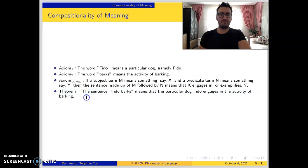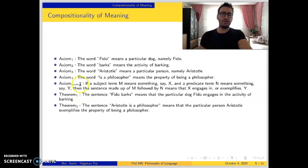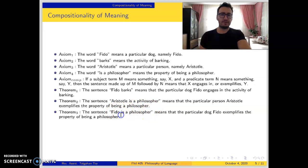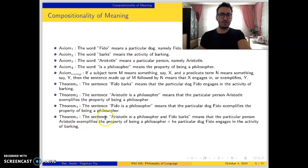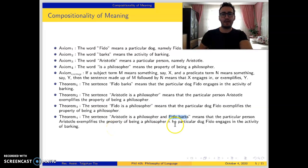By adding further axioms — like an axiom about the proper name 'Aristotle' and another axiom that the phrase 'is a philosopher' means the property of being a philosopher — we can derive a theorem about the sentence 'Aristotle is a philosopher' or 'Fido is a philosopher.' For sentences of the form 'Aristotle is a philosopher and Fido barks,' we have a sentence, a sentential connective, and another sentence. The sentence 'Aristotle is a philosopher and Fido barks' means that the particular person Aristotle exemplifies the property of being a philosopher, and the particular dog Fido engages in the activity of barking.